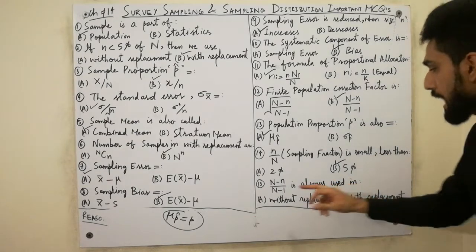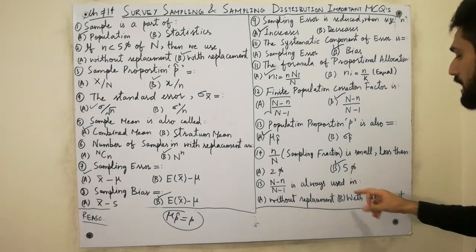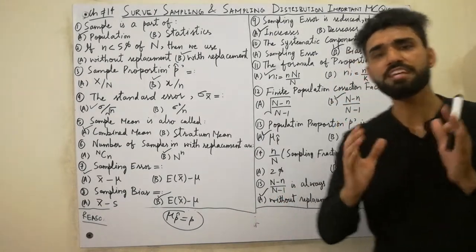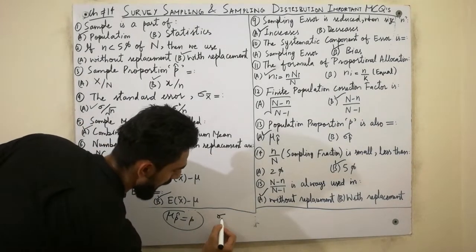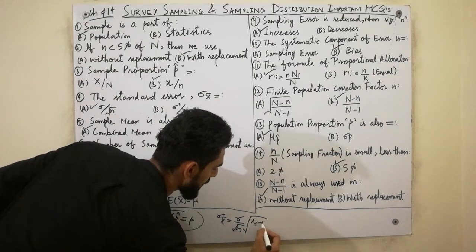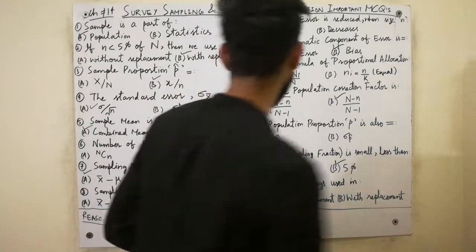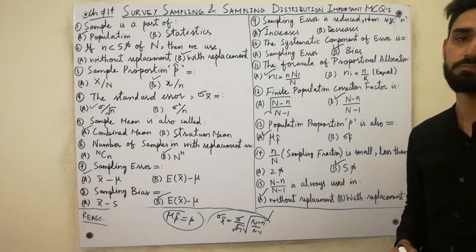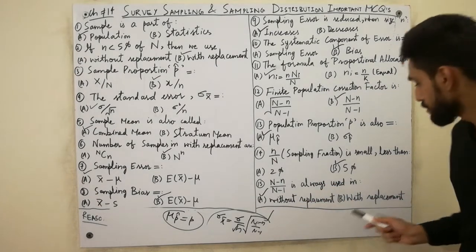The term (capital N minus small n) over (capital N minus 1) is always used in without replacement. In any problem of without replacement, we will face this term. For example, sigma x-bar equals sigma divided by root n times root of (N minus n)/(N minus 1). Must remember this factor is used without replacement, not with replacement.